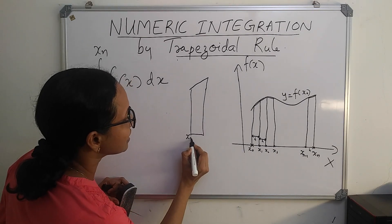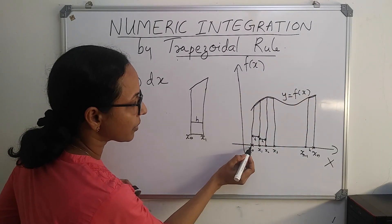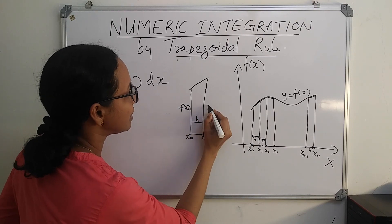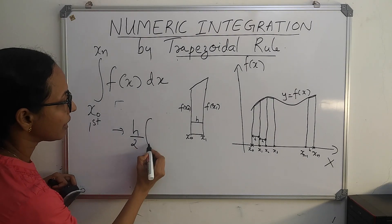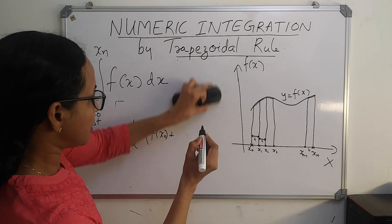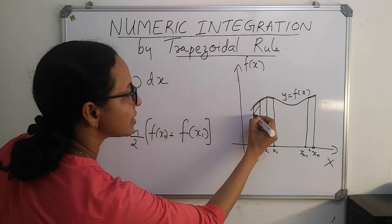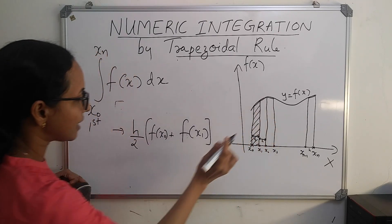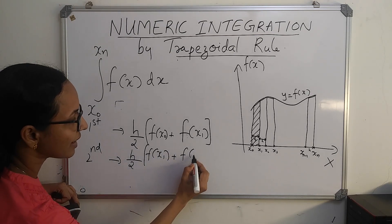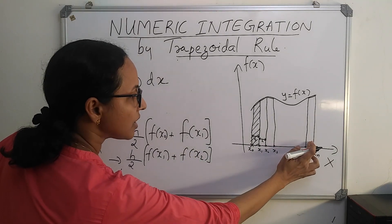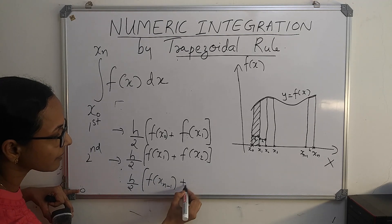Considering the first trapezoid: here it is x₀, here it is x₁, and this distance is h. This is the function y = f(x), so this length will be f(x₀) and this will be f(x₁). The area of the first trapezoid will be h/2 × (f(x₀) + f(x₁)). Similarly, the area of the second trapezoid will be h/2 × (f(x₁) + f(x₂)). And the last trapezoid's area will be h/2 × (f(xₙ₋₁) + f(xₙ)).